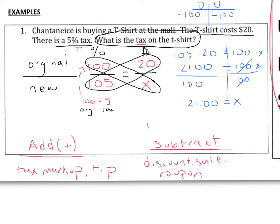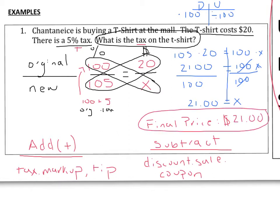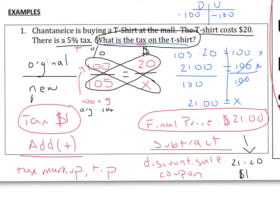The final price of our shirt after 5% tax is $21. But if I answered $21, would my answer be correct? No — because the question asks what is the tax on the t-shirt, not the final price. If our final price is $21 and we paid $20, then $21 minus $20 equals $1. So the tax on the shirt is $1. That is our answer.